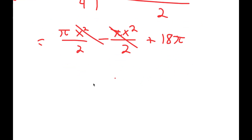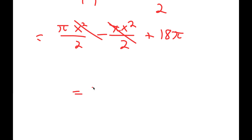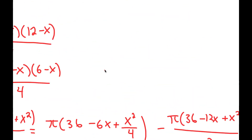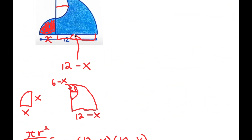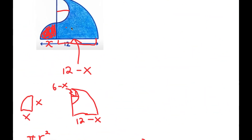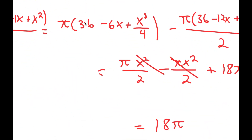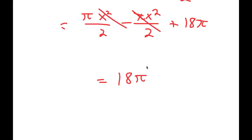The x² terms cancel out, leaving 18π. So the area of the shaded blue region is 18π.